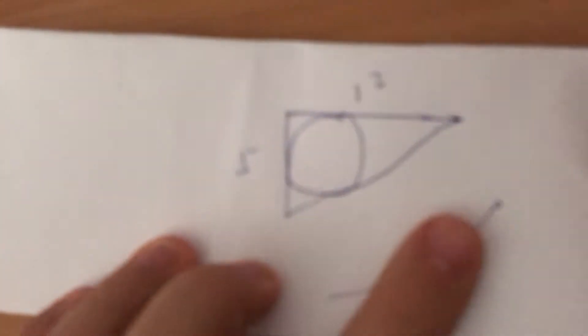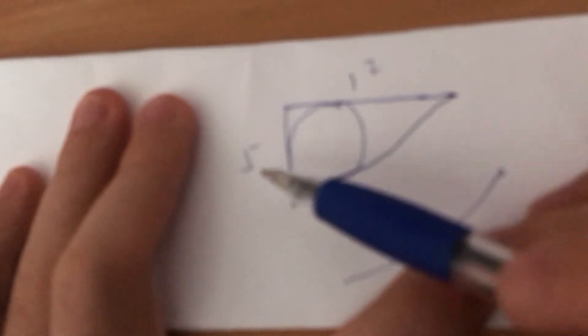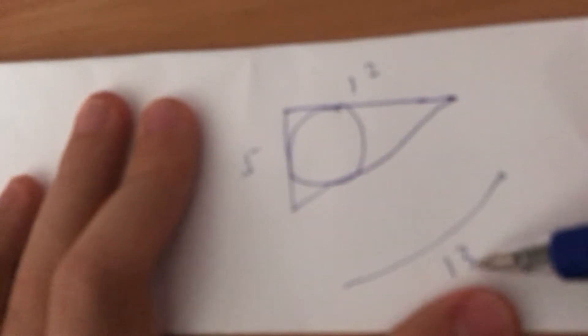So 12 squared is 144, plus 25 is 169, equals 13 squared. So this is actually a right angle here, and we're assuming these are all tangents to the circle.